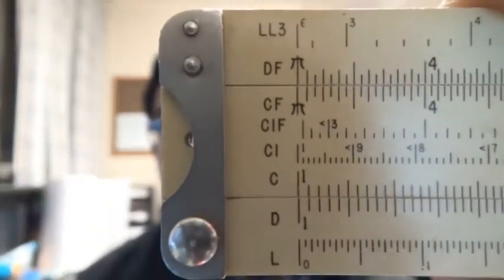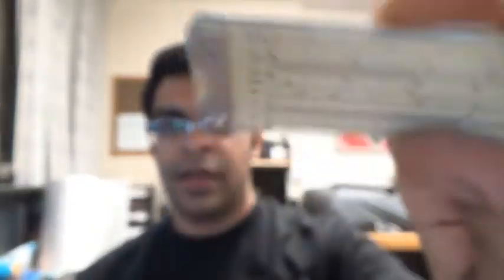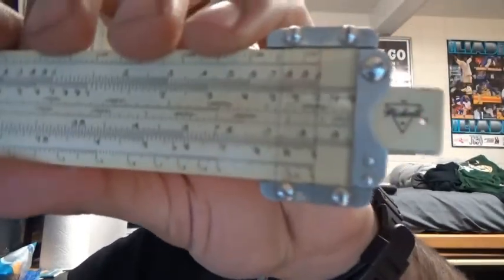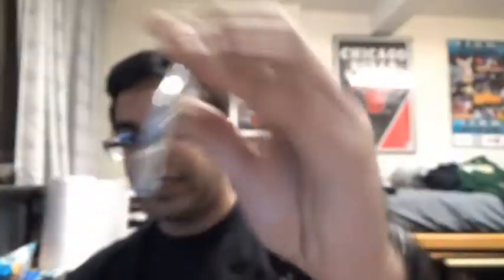So here's another picture of the scales on this thing. This is the backside and this is the front. So there you go. Picket model 300. Fun little rule. I like to keep it in my backpack so I can show my friends how terrible I am at using slide rules.